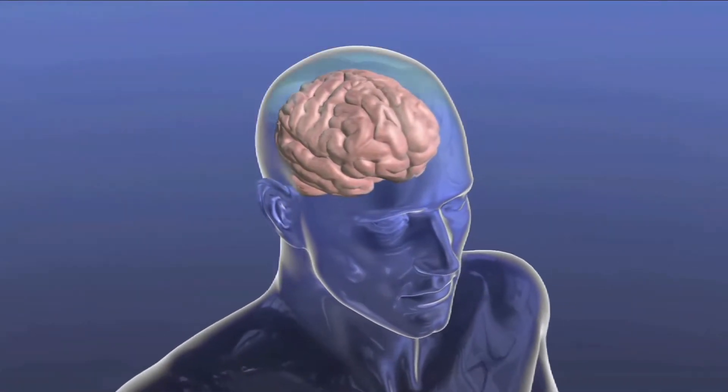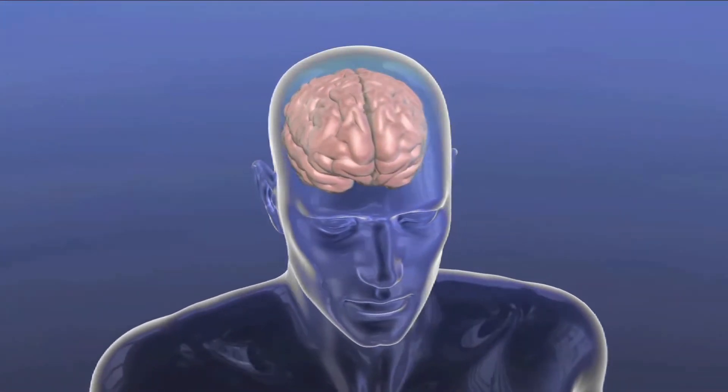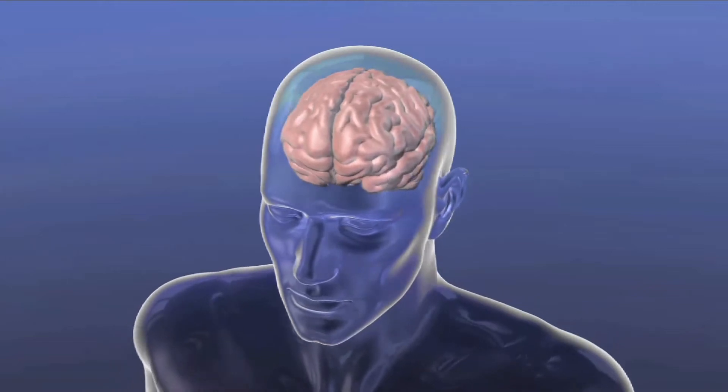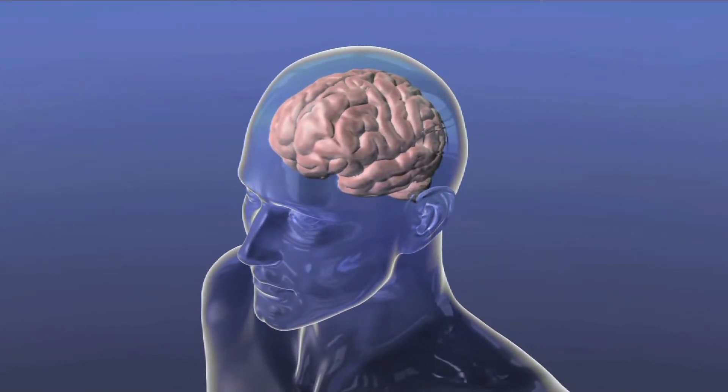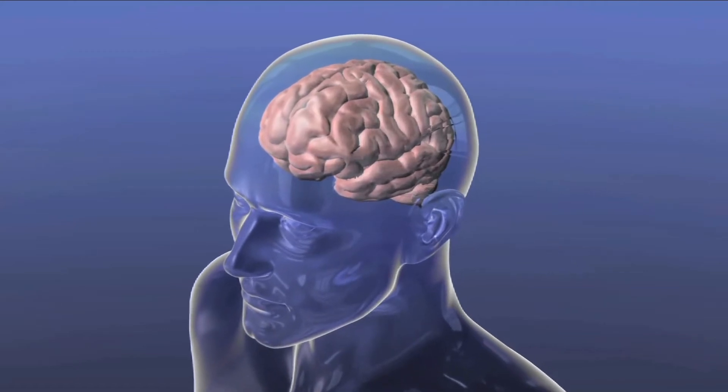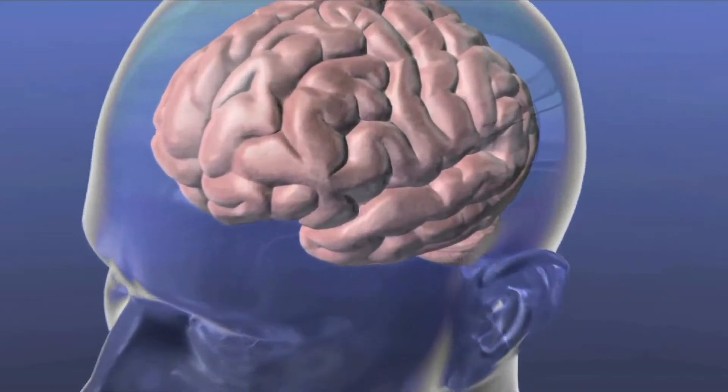The human brain may not look like much - a couple of pounds of pink wrinkled tissue - but the last hundred years of neuroscience have shown that the brain is an incredibly densely wired computer made out of hundreds of billions of individual cells called neurons.